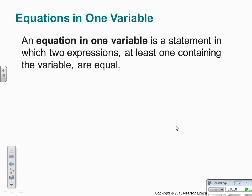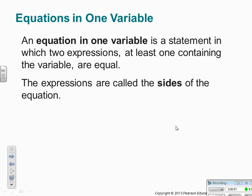Don't write this down, we're just talking about it. An equation in one variable is a statement in which two expressions, at least one containing the variable, are equal. It's our classic equation. One variable means that there's only one x value versus an x and a y or an x and a y and a z. The expressions are called sides of the equation. So I will refer to the left-hand side and the right-hand side, using the equal sign to divide it.